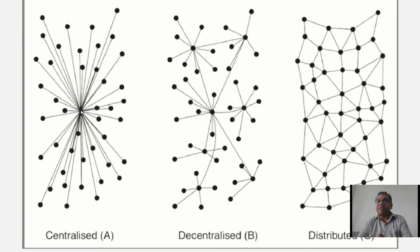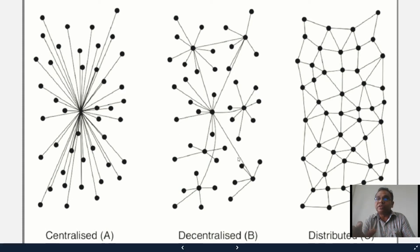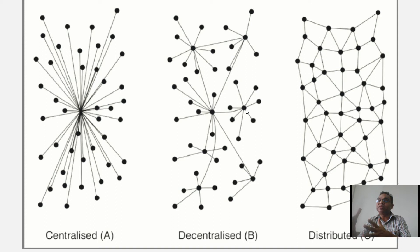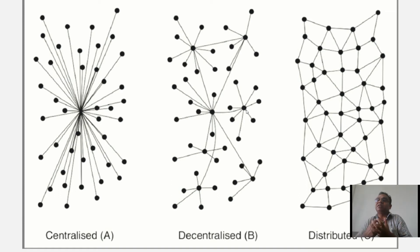If we look at the decentralized network, what we observe in this figure is that there are more than one central server. Instead of one central server, there are multiple central servers connected with each other. The nodes can communicate to another central server, so if one central server fails the work can be done by another central server. That is known as decentralized computing — many central servers connected together make it a decentralized network.